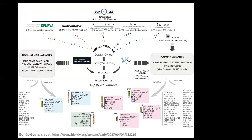Here is a flowchart of the analysis. On top are the different cohorts available; each cohort was QC'd, phased, and imputed separately, resulting in 15 million imputed variants. For variants present in HapMap, we combined results with data from the DIAGRAM consortium, while for variants not in HapMap we used a meta-analysis from our own datasets.